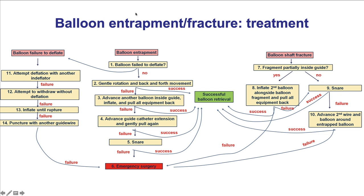To summarize: balloon entrapment and fracture is a potential complication whenever a balloon is used. The key factor for prevention is to not use balloons with a kinked shaft — discard them and use new equipment. If the balloon fails to deflate, it can sometimes be punctured with another guide wire. If the balloon is entrapped, advance a guide extension or deep-seat the guide and pull back, or use a snare. If the balloon shaft fractures and is protruding back into the guide catheter, use another balloon to trap the fragment and retrieve everything together; otherwise a snare can be used.